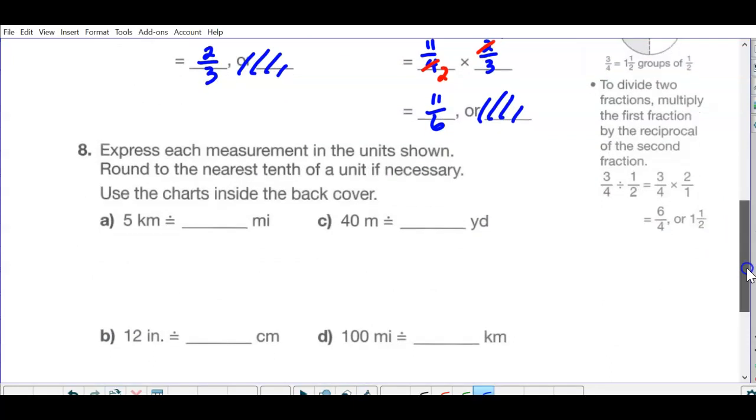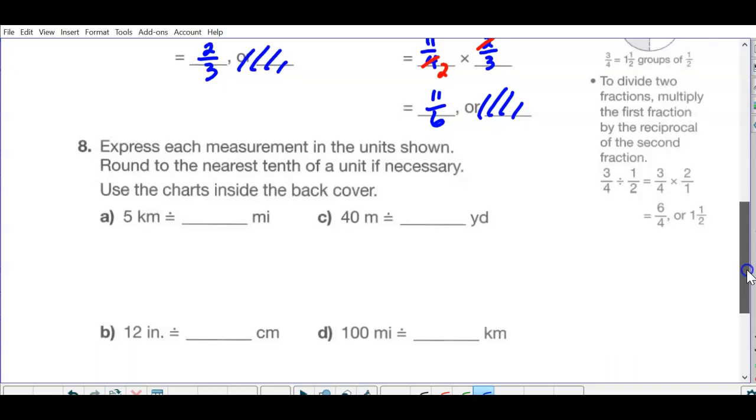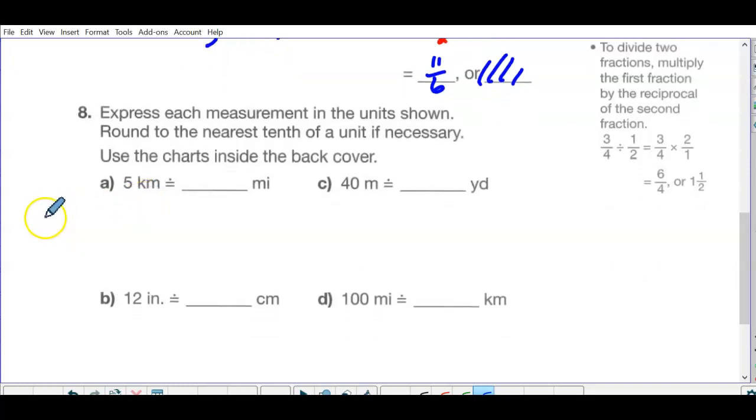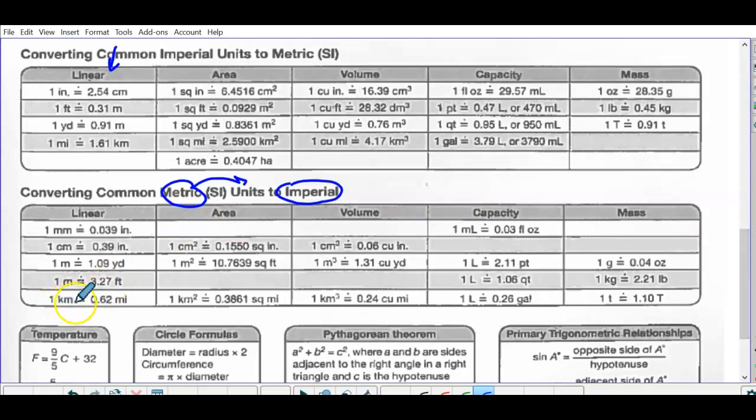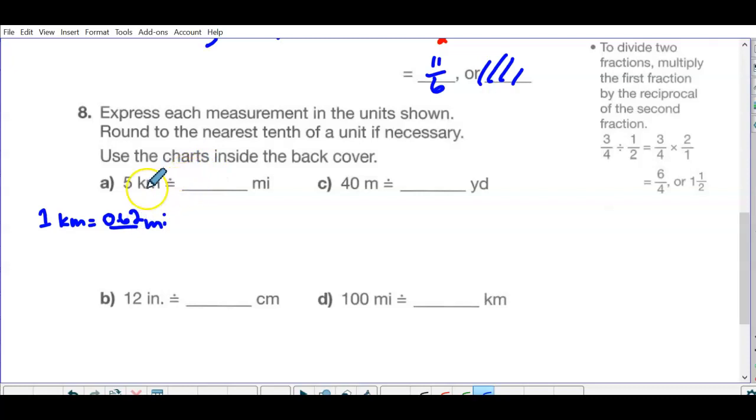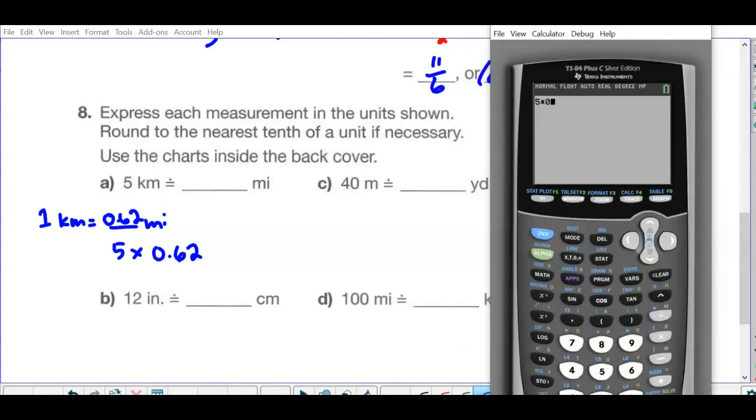And 8, express each measurement in the unit shown. Round to the nearest tenth if necessary. Use the charts inside the back cover. So if I'm going from kilometers to miles, I want what 1 kilometer is in miles. So if you look in your chart, this is a linear measurement from metric to imperial. So 1 kilometer is 0.62 miles. So if I've got 5 kilometers, then I want to take 5 and multiply by 0.62. 5 times 0.62, and that's 3.1 miles.